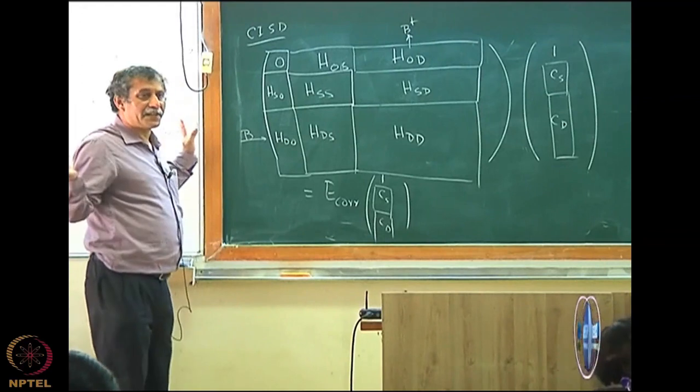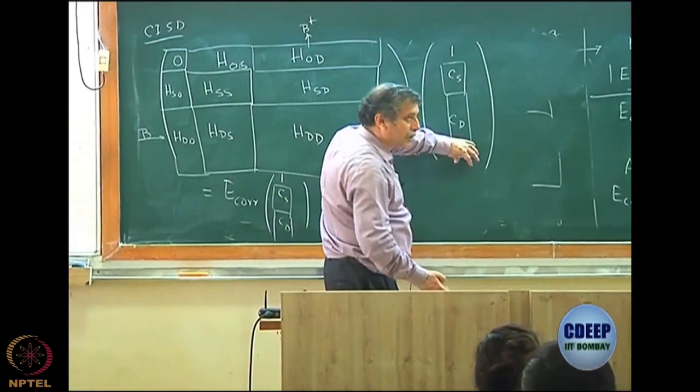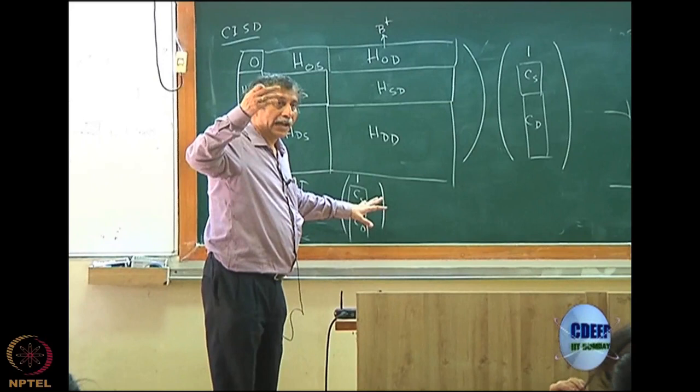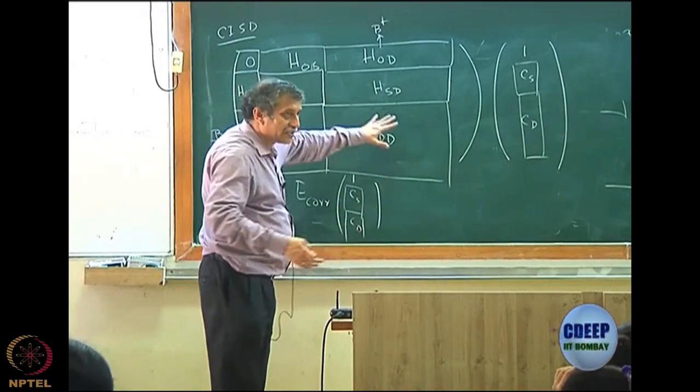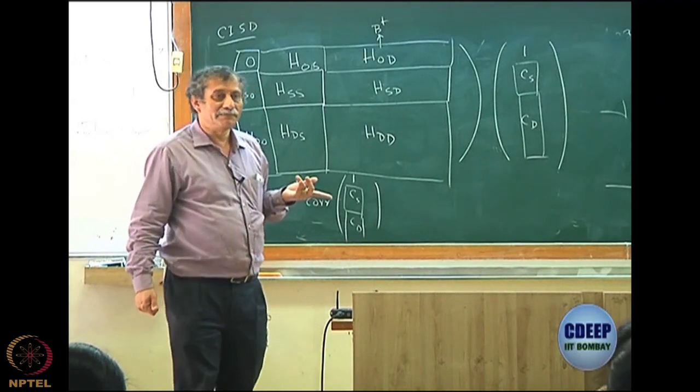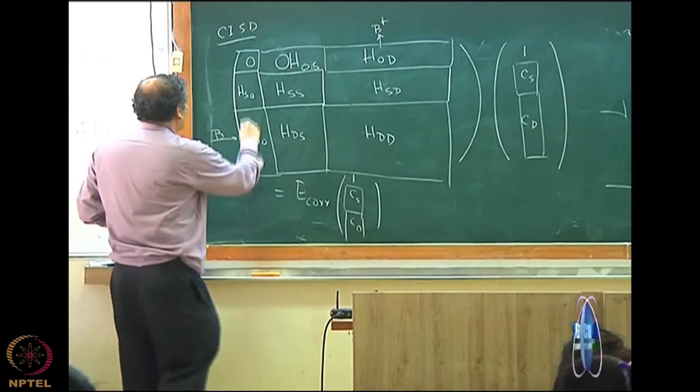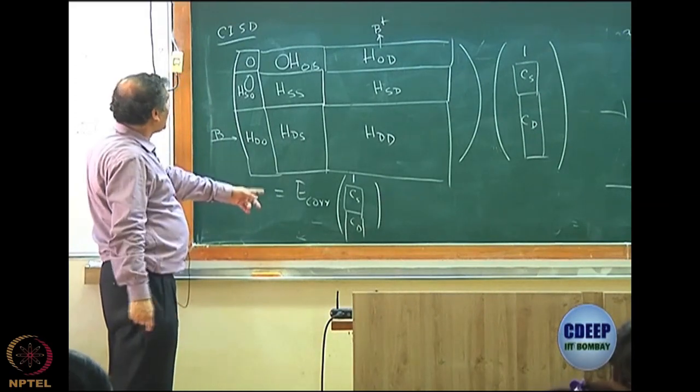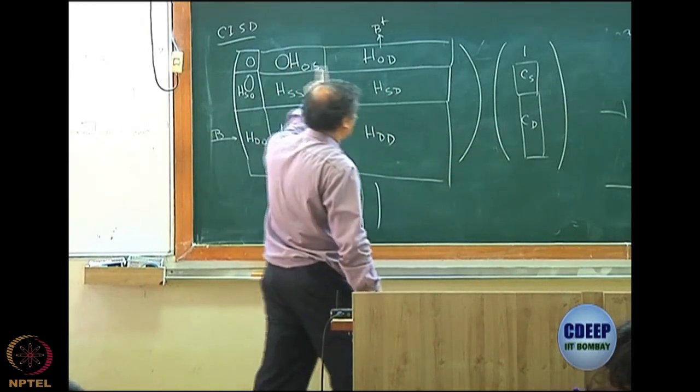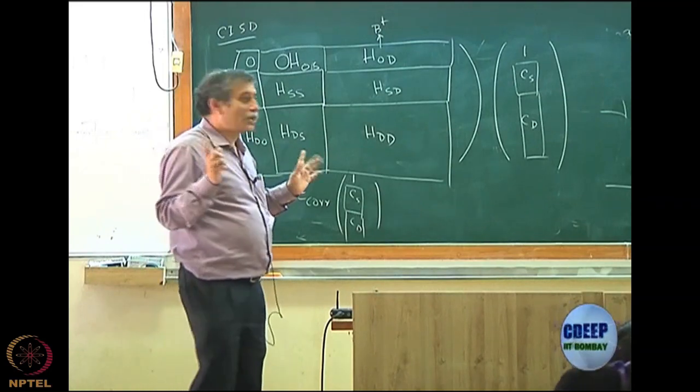So what you do is block-wise: first block times the first column is E correlation into 1, that is E correlation. Now that B dagger I have written down, that B dagger C will just change as more terms. However we know that we have Brillouin's theorem, so now I am going to apply the Brillouin's theorem for the Hartree-Fock. So this block is also 0 and this block is also 0. So interestingly, your correlation energy remains as B dagger CD, because this is 0, so 0 times this is 0. So correlation energy does not change. Because of the Brillouin's theorem.